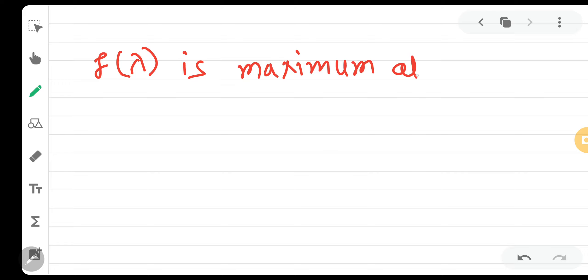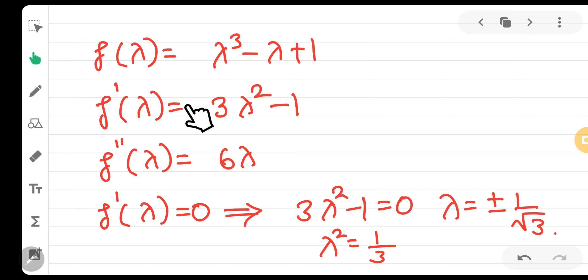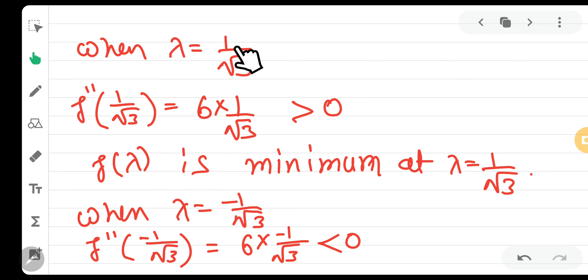What do we have to see? Volume was a function of lambda which we have to minimize. Single derivative and double derivative. First order derivative equals 0 gives lambda two values. Second order derivative greater than 0 means minimum function at lambda equals 1 by root 3. Function is minimum.